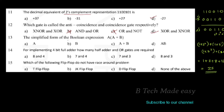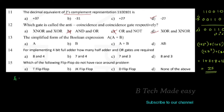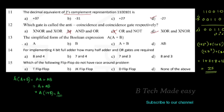The simplified form of the Boolean expression A·(A + B). Expanding: A·A + A·B = A + AB. Taking A common: A(1 + B). Since 1 + B = 1, this equals A. The correct option is A.